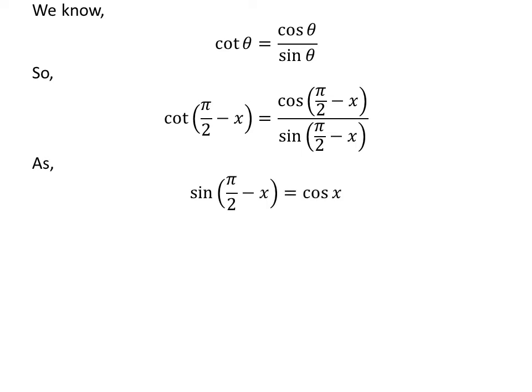As we know, the trigonometry identity sine of half of pi minus x is equal to cosine of x. The proof of this trigonometry identity has been explained in the video appearing in the upper right corner. The link of the video has also been mentioned in the description section.